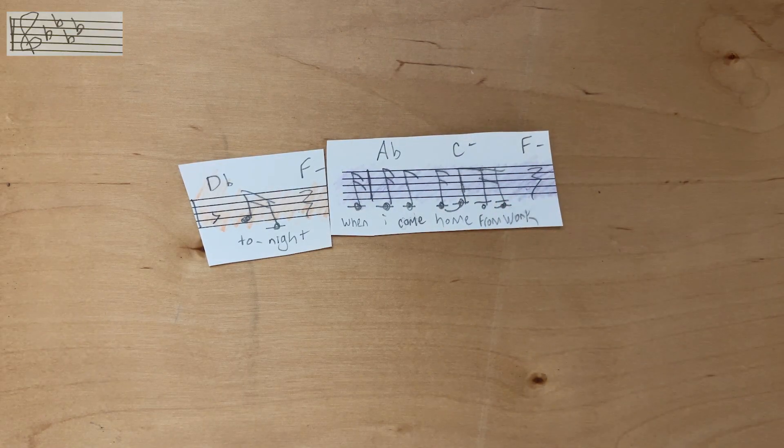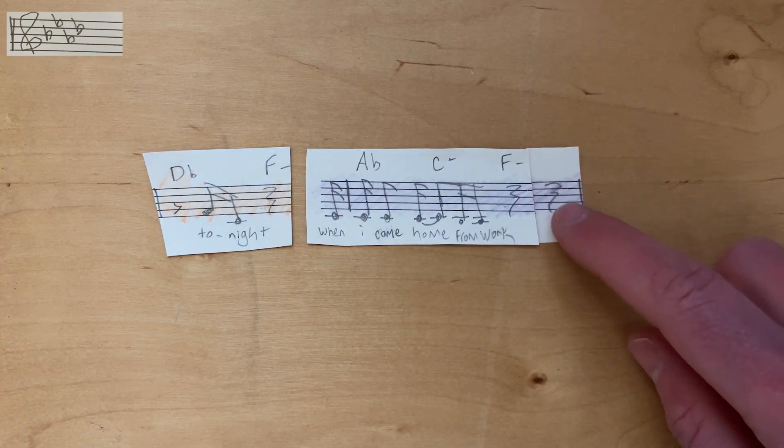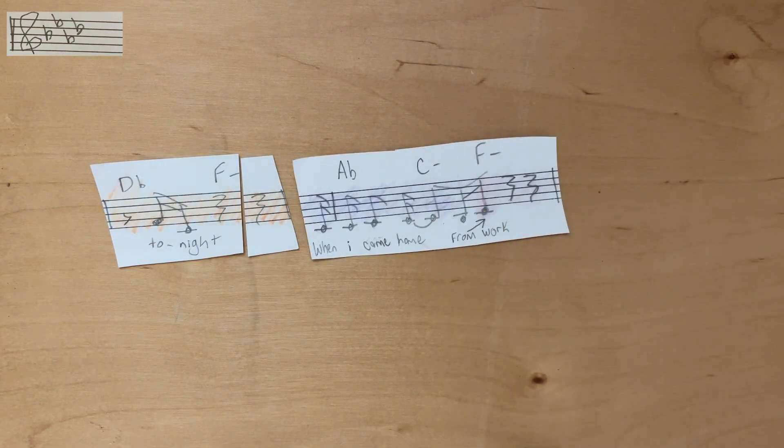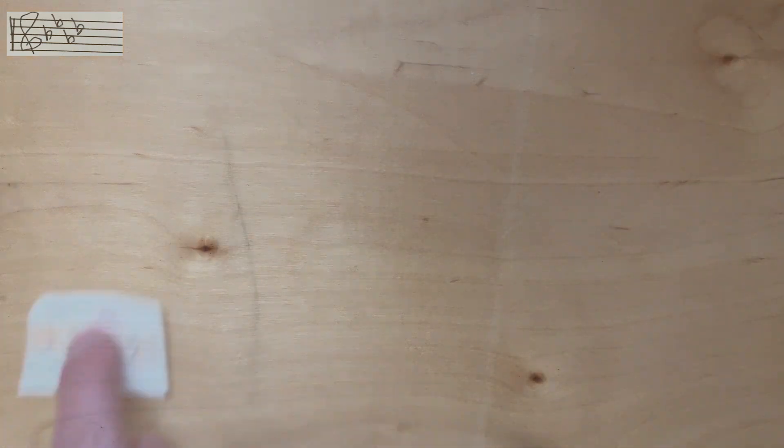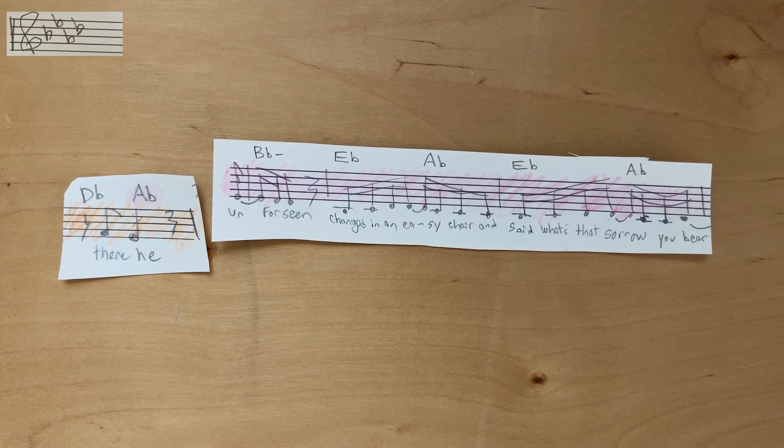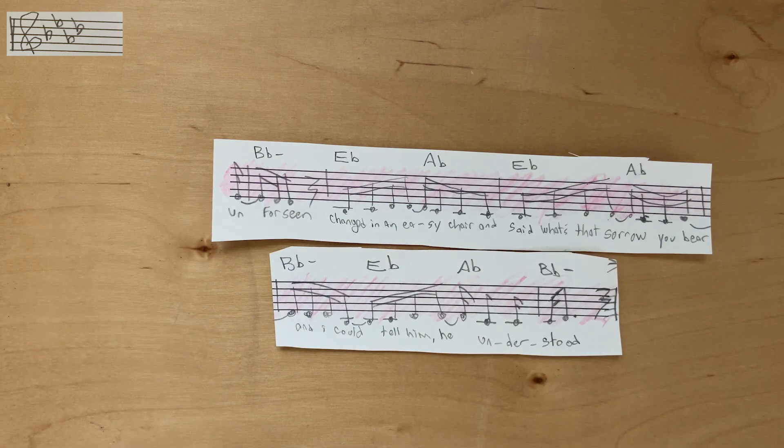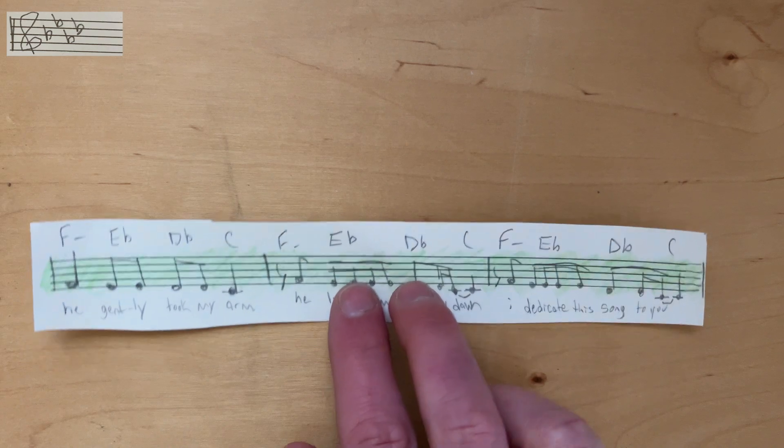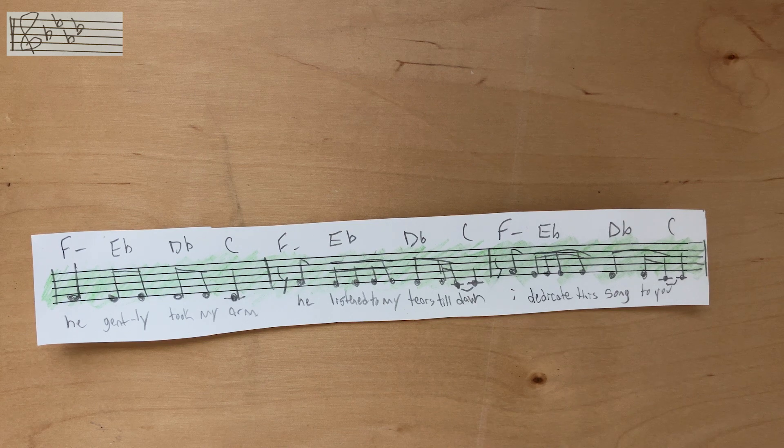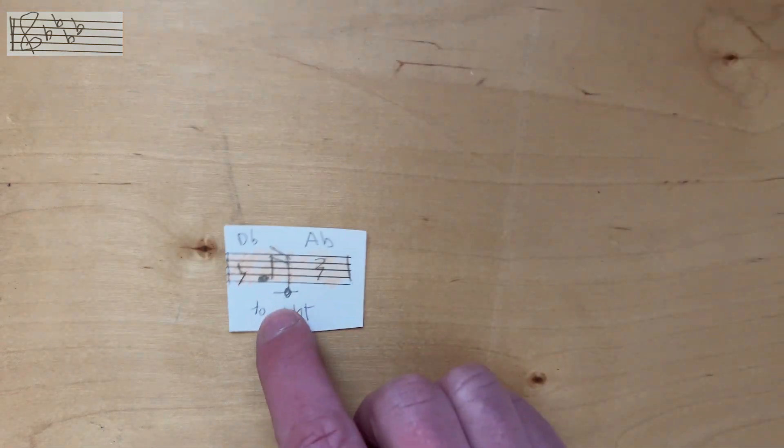Tonight when I came home from work, tonight when I came home from work. There he, unforeseen, changed in an easy chair and said what's that sorrow you bear? And I could tell him he understood. He gently took my arm, he listened to my tears till dawn. I dedicate this song to you.